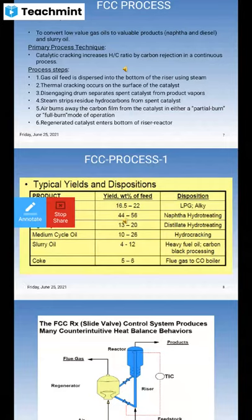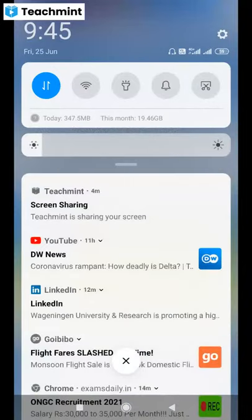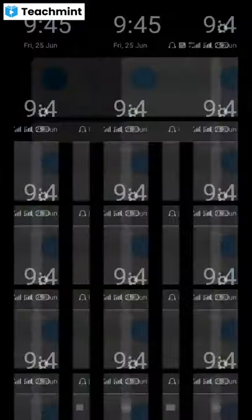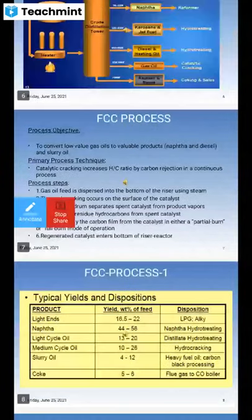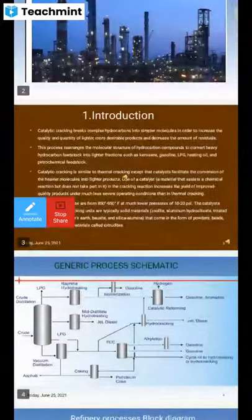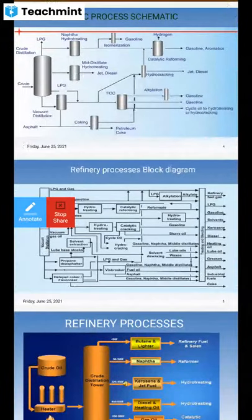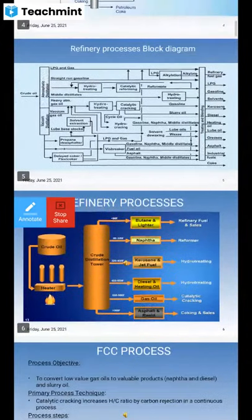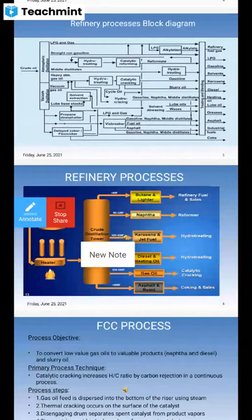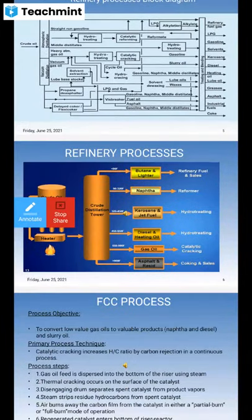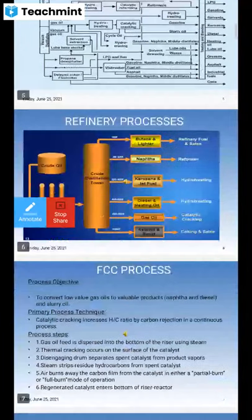Now we can see the presentation. Let us go from the basics of your block diagram. This is your crude oil where it has been heated and sent to distillation — this is your primary distillation process. Here you will get the butadiene, then you'll get the naphtha, then the crude distillation unit, then you'll get the diesel, hydrotreating, and catalytic cracking.